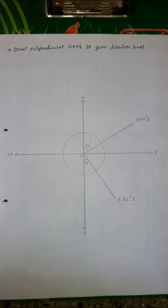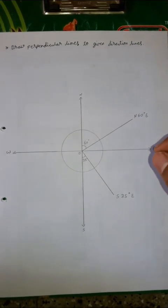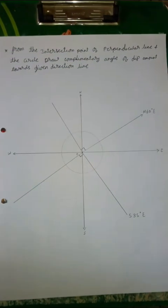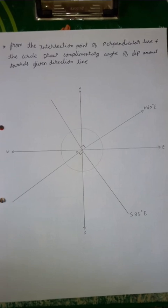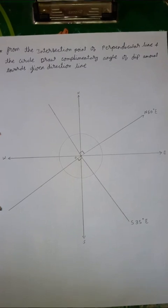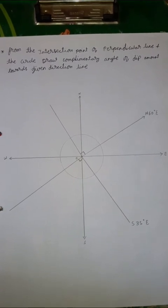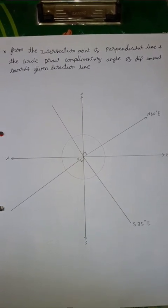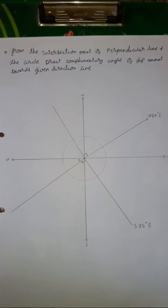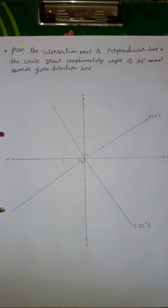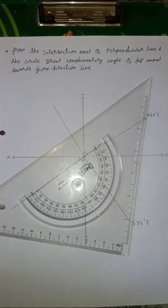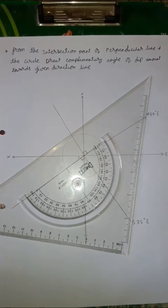After drawing the direction lines, we have to draw perpendicular lines for the direction lines. After drawing the perpendicular lines, we want to draw a complementary angle line. From the intersection point of the perpendicular line and the circle, draw a complementary angle of the dip amount towards the given direction line. In the south 35 degree east direction, the given amount of dip is 30 degrees.